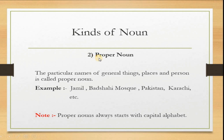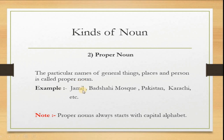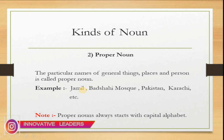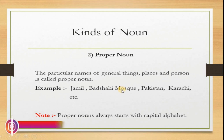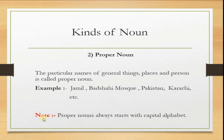Number two: Proper noun, ism khas. The particular names of general things, places and persons is called proper noun. Khae maan hun, shay, ayin jay lai mksoos chay nalai ke ism khas chay bo aahe. For example: Jamil ik mksoos maanhu joh nalau aahe. Baadshahi Mosque ik particular masjid joh nalau aahe. Pakistan ik mksoos country joh nalau aahe. Karachi ik mksoos city joh nalau aahe.